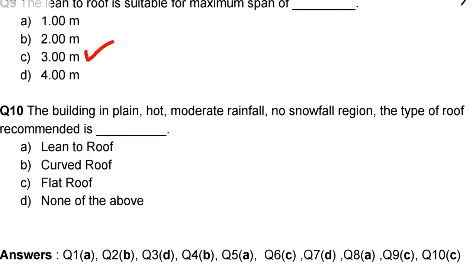Next question: the building in plain, hot, moderate rainfall, no snowfall region, the type of roof recommended is. Option A: lean to roof, Option B: curved roof, Option C: flat roof, Option D: none of the above. The correct answer is option C, flat roof.